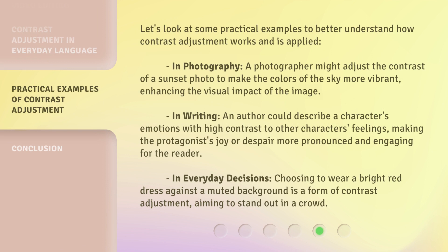Let's look at some practical examples to better understand how contrast adjustment works and is applied. In photography, a photographer might adjust the contrast of a sunset photo to make the colors of the sky more vibrant, enhancing the visual impact of the image. In writing, an author could describe a character's emotions with high contrast to other characters' feelings, making the protagonist's joy or despair more pronounced and engaging for the reader. In everyday decisions, choosing to wear a bright red dress against a muted background is a form of contrast adjustment, aiming to stand out in a crowd.